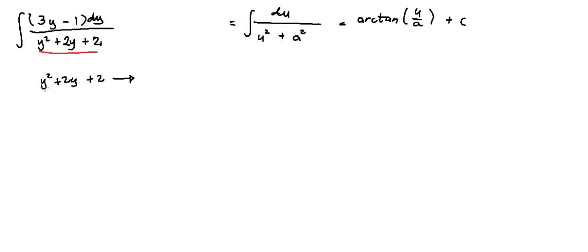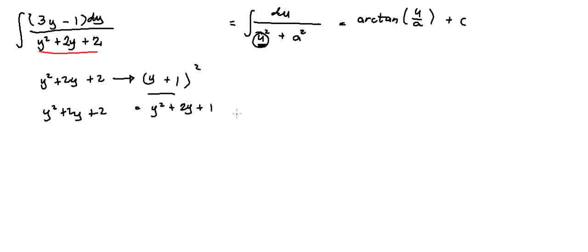Using completing the square, we need some function of y that is being squared. Maybe we have y plus 1. If we expand that, we get y squared plus 2y plus 1. But our original form is y squared plus 2y plus 2, so we need to add plus 1. So y squared plus 2y plus 1 plus 1 equals y squared plus 2y plus 2.